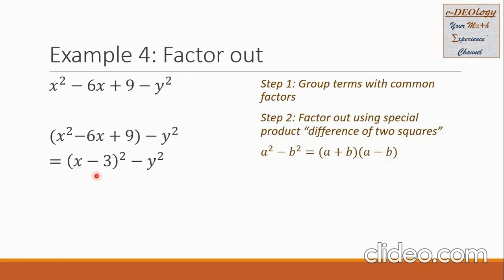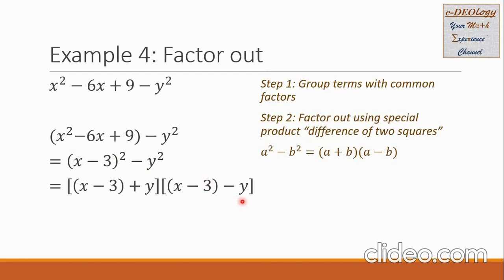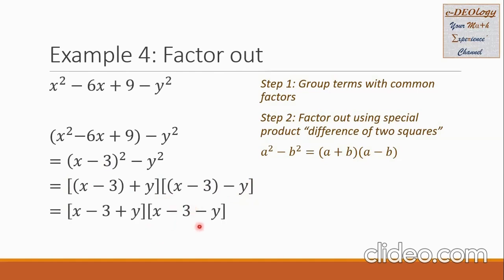In this case, x minus 3 is considered to be a and y is b. Applying the formula, we get the quantity x minus 3 plus y, times the quantity x minus 3 minus y. Then we remove the grouping symbol inside the square brackets — the parentheses inside are now removed. So these are the factors.